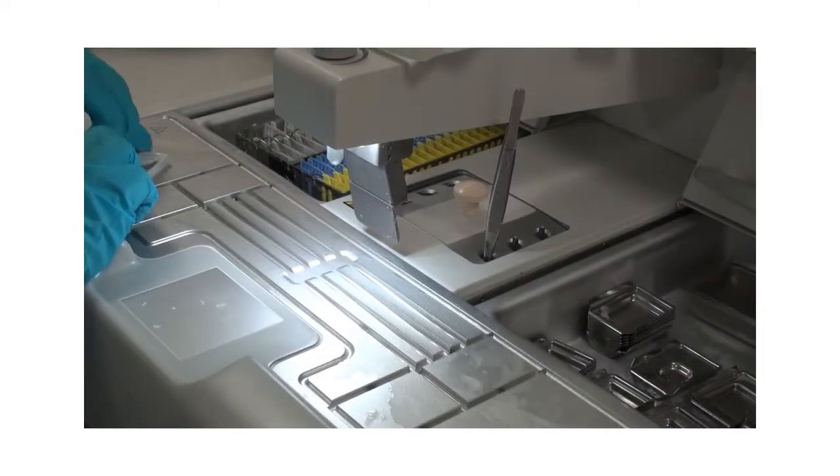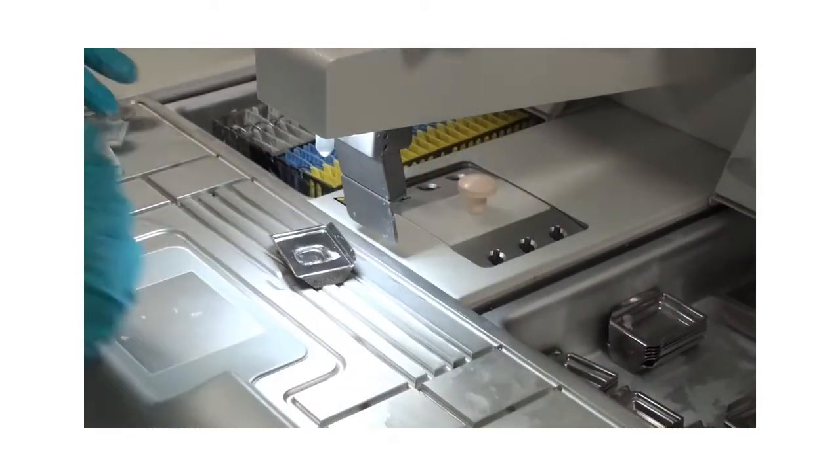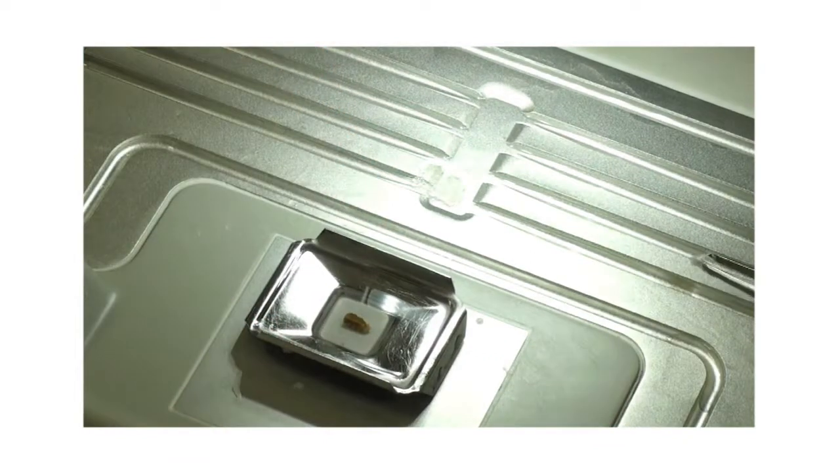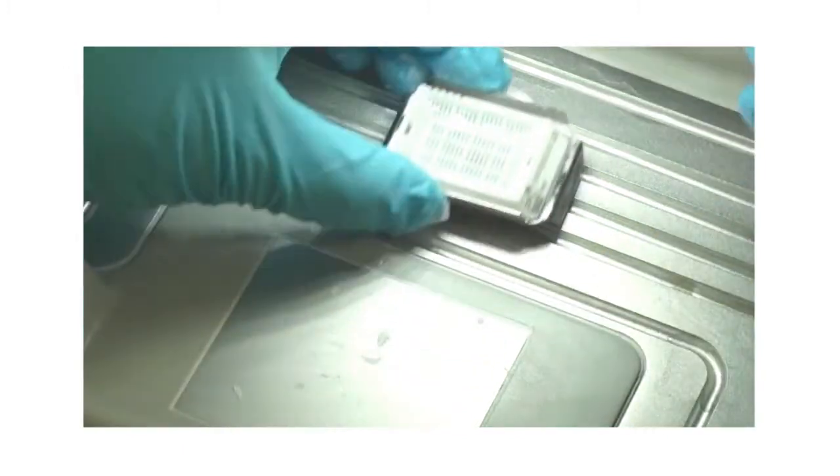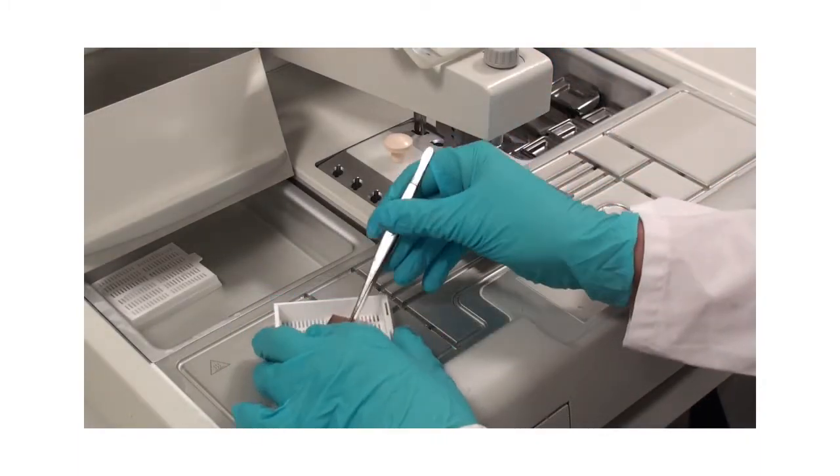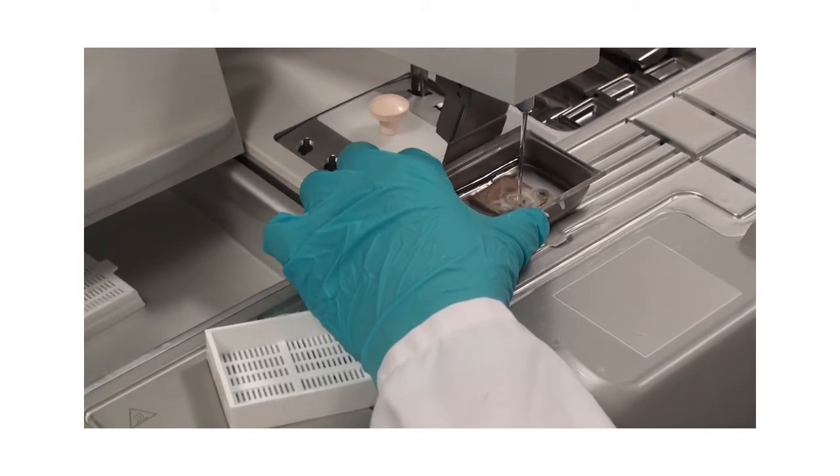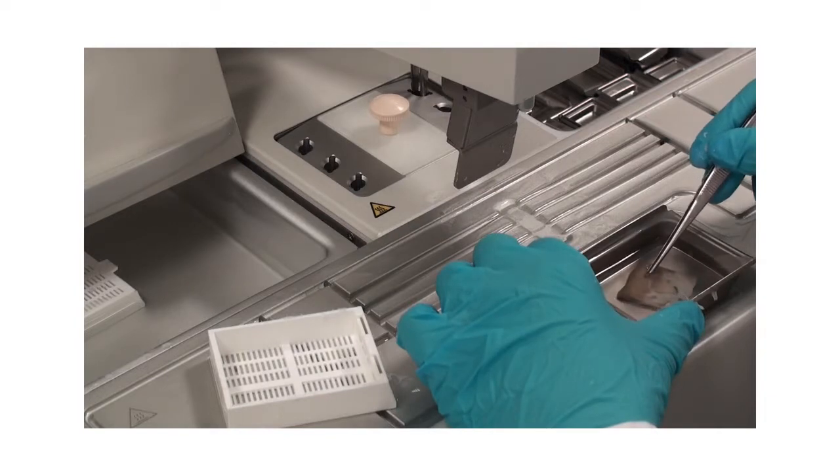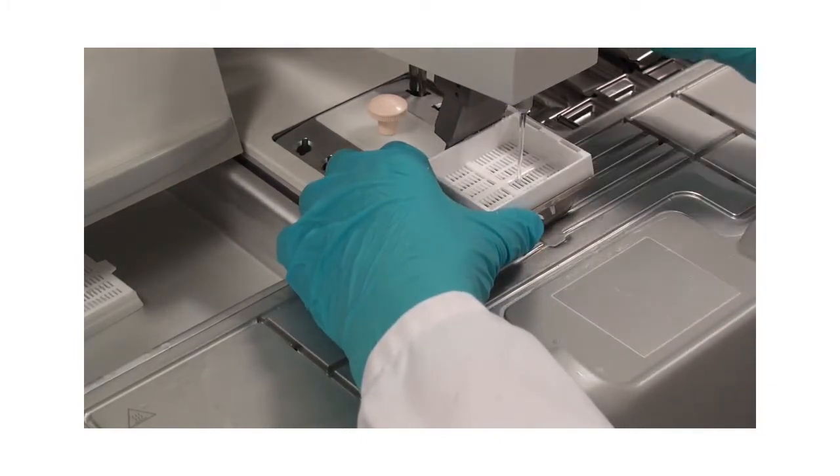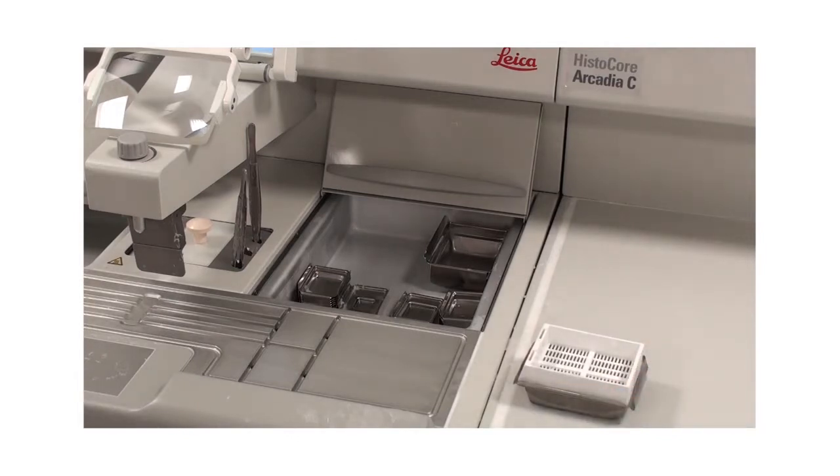Open your cassette and select a suitable mold, depending on the size of the tissue. Transfer the tissue to the mold and start to release paraffin. The large cold spot is designed to assist tissue orientation even with large super mega cassettes. Place the cassette body on top of the mold and fill it up with paraffin.